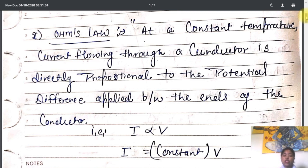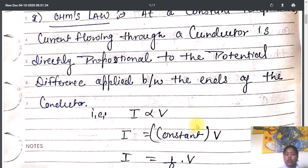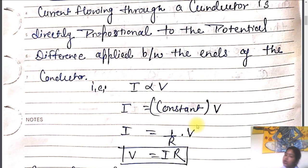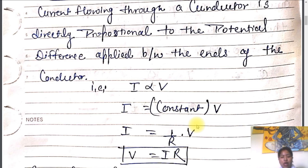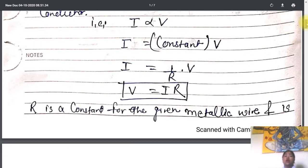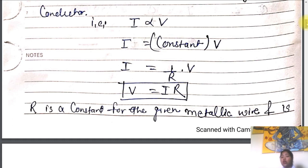Finally, if we write this down mathematically, we can write I is proportional to V — current flowing through the conductor is directly proportional to the potential difference applied across the ends of the conductor. If we want to remove the proportionality sign, we multiply a constant to the right side: I equals to constant into V. We add a constant 1 upon R, so I equals to 1 upon R into V. And finally, we can write V equals to I into R. Here R is defined as the constant of proportionality — R is a constant for a given metallic wire.